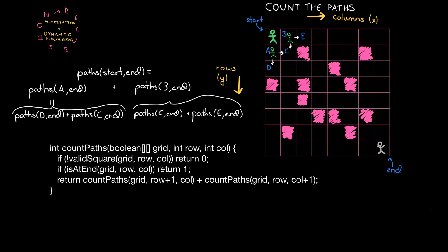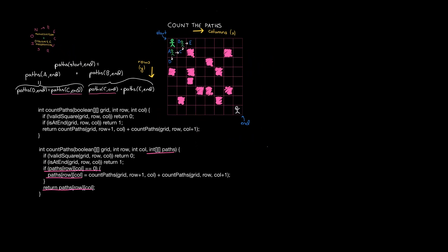One thing we might notice is that in the example above, we compute the number of paths from C to the end twice, and that's unnecessary. What we should do is say, if I've already computed something, just return that stored value. Every single thing I compute, I want to store that value and return it if I ever ask for it again. That's a memoization approach — we compute it once and then if we ever need that value again, just return the stored value. The runtime is now O(n²) because we have n² possible cells to compute, and each computation is constant time given other work is already done.